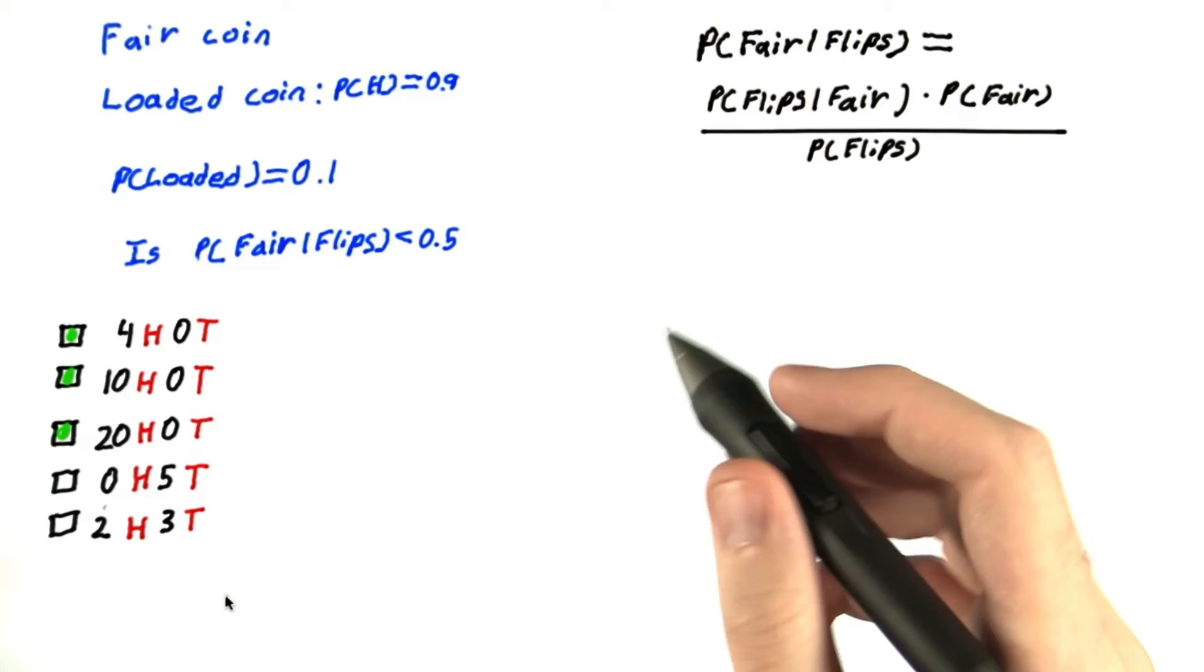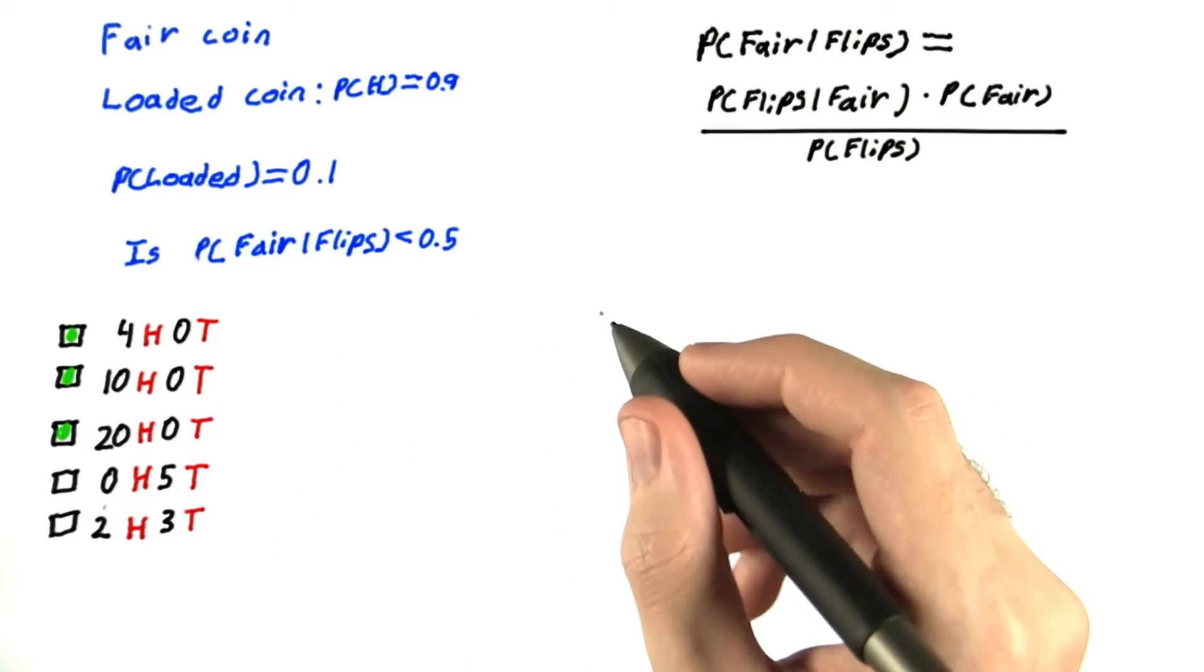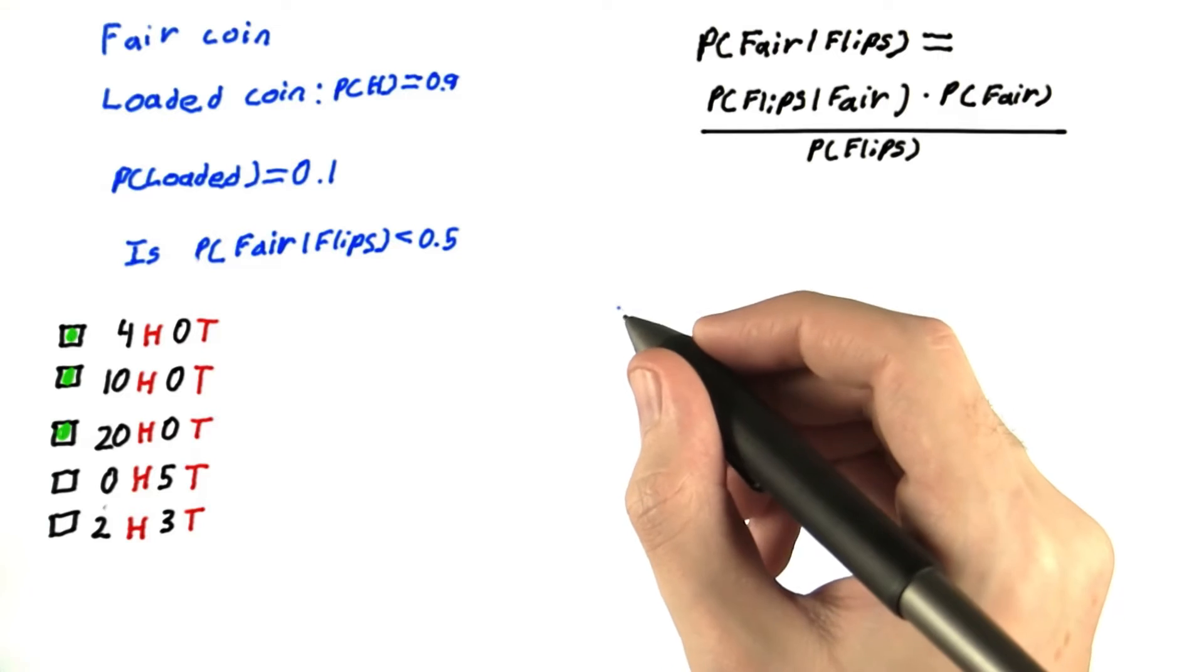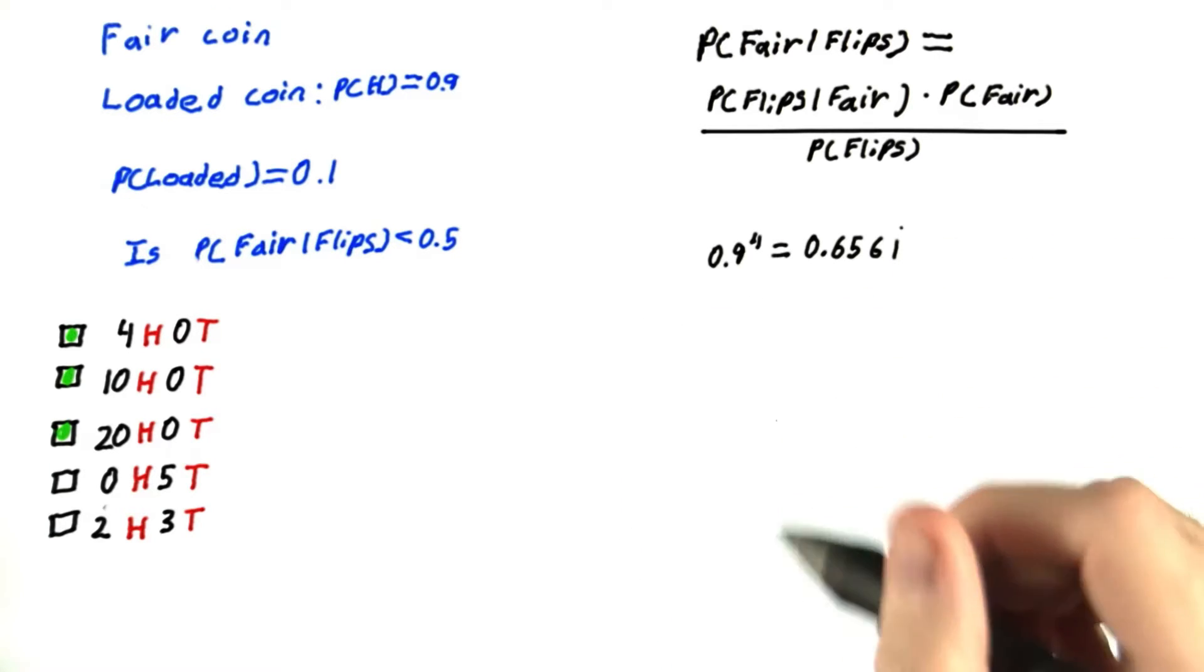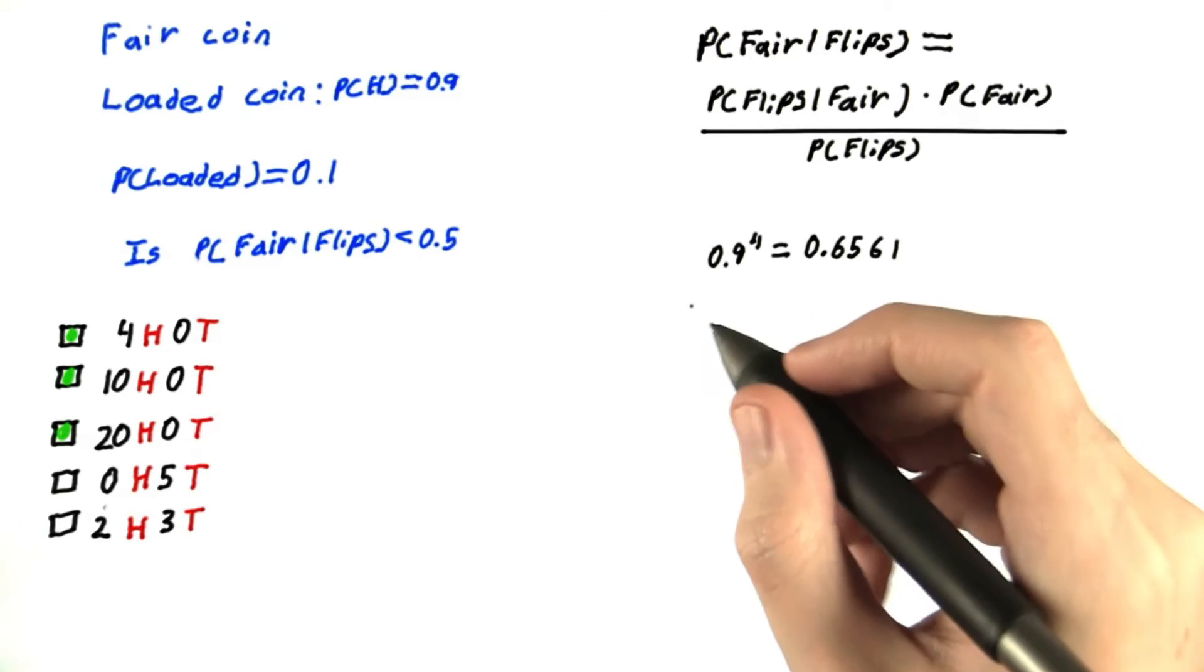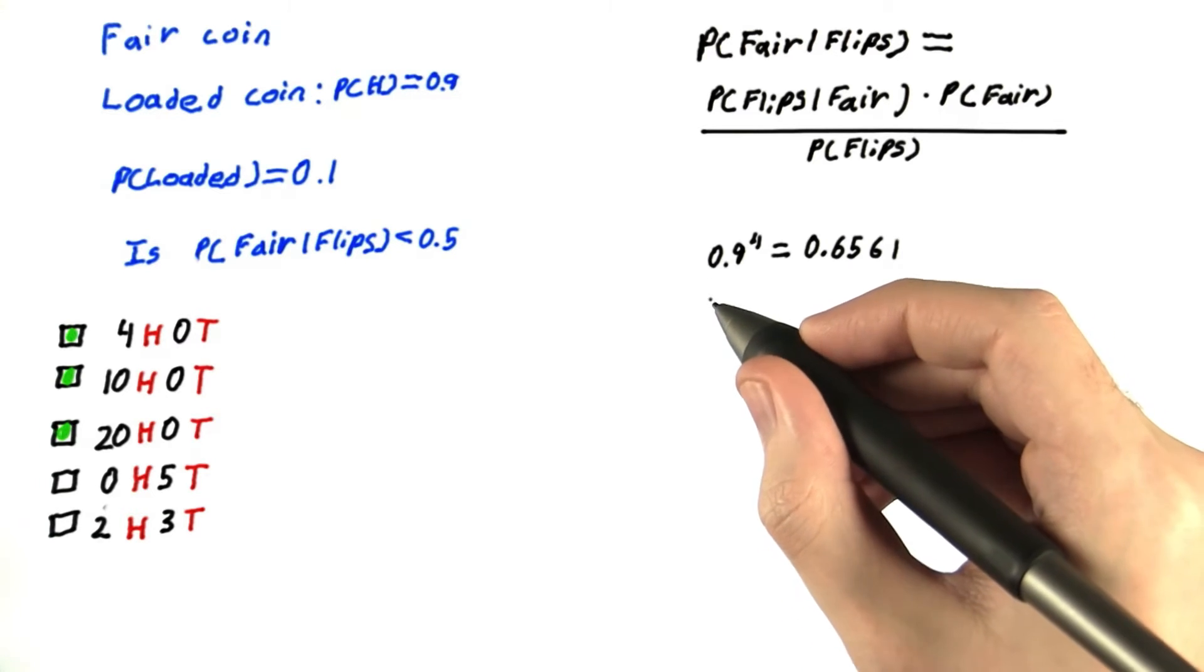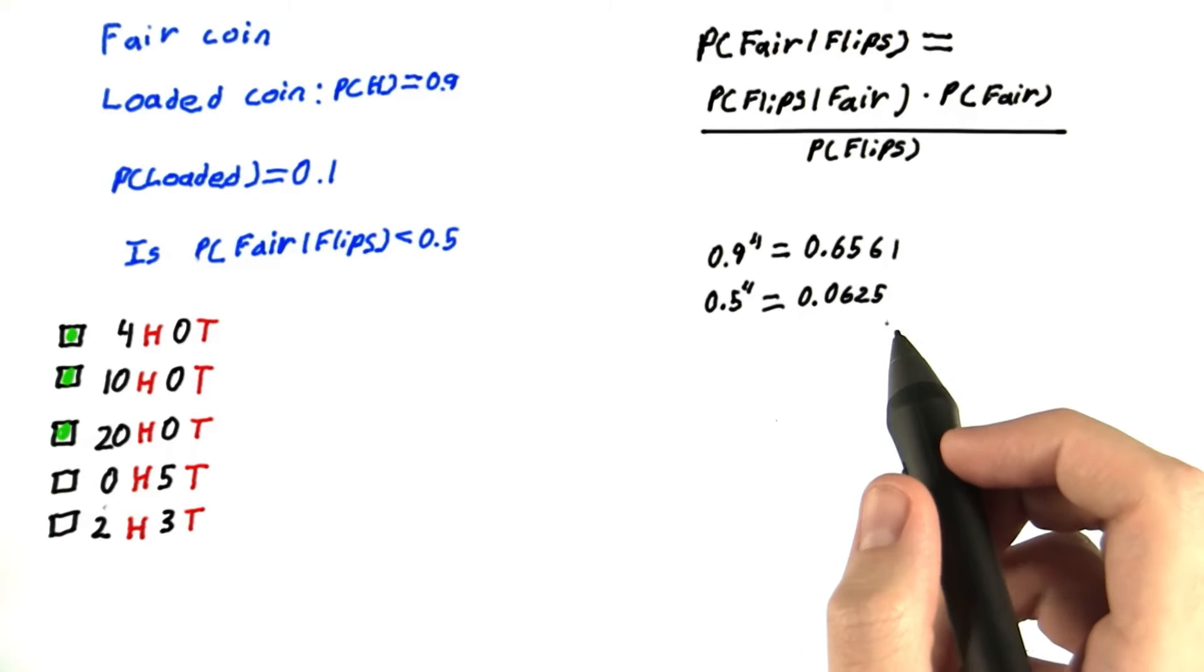So let's just evaluate this for the four heads case. The probability of having four heads in a row from a loaded coin is going to be 0.6561, whereas the probability for a fair coin is 0.0625.